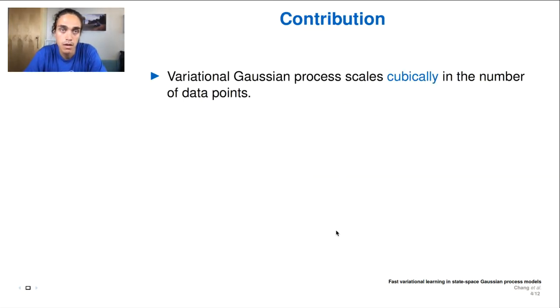The main type of approximate inference method is usually known as the variational Gaussian process, or VGP. The problem with the VGP is that we have to do a matrix inversion in terms of the number of data points, and this scales cubically.